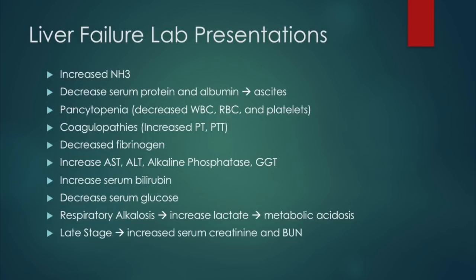Lab abnormalities in liver failure include increased ammonia, decreased serum albumin and protein leading to ascites, pancytopenia (decreased WBC, RBC, and platelets), coagulopathies with increased PT and PTT and decreased fibrinogen, increased liver enzymes (AST, ALT, alkaline phosphatase, GGT), increased serum bilirubin, decreased serum glucose, and respiratory alkalosis leading to metabolic acidosis. Late-stage liver failure shows increased serum creatinine and BUN, indicating hepatorenal syndrome.